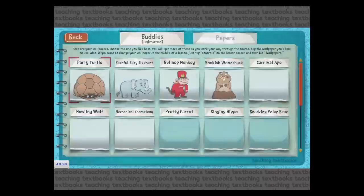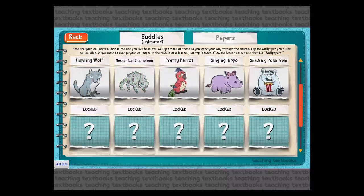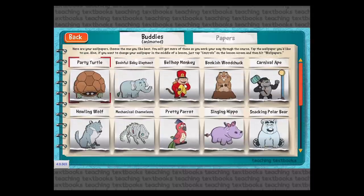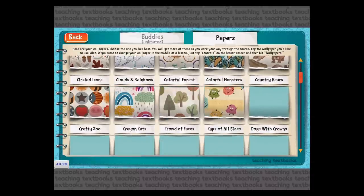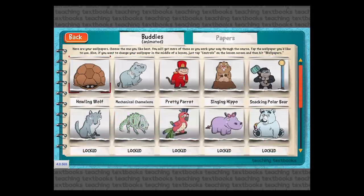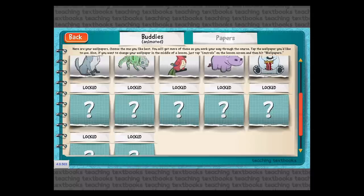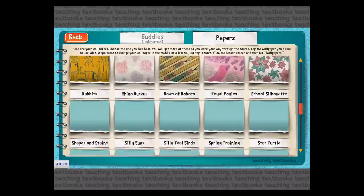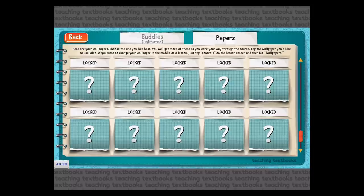Now let me go to the wallpaper book. You've already seen the turtle wallpaper and there are lots of others. We're on the Buddy tab, so this only includes wallpapers that have buddies in them. There's also a tab with static wallpapers that don't have animated buddies. You may have noticed that some of these are locked — you start the course with some buddies and static wallpapers, but as you do lessons you unlock new ones, giving the student an incentive to keep going.